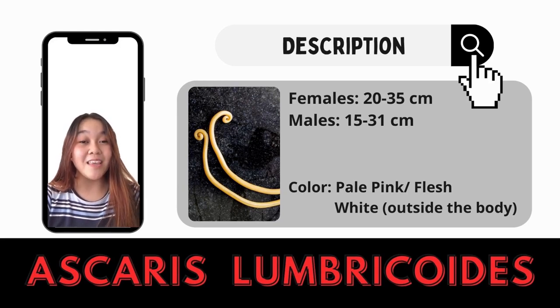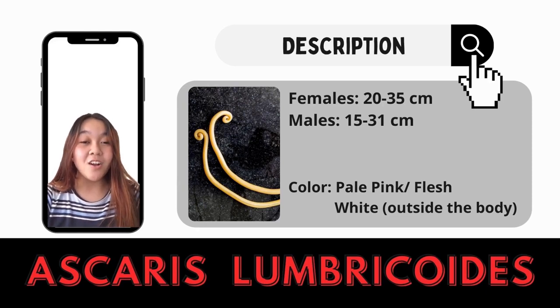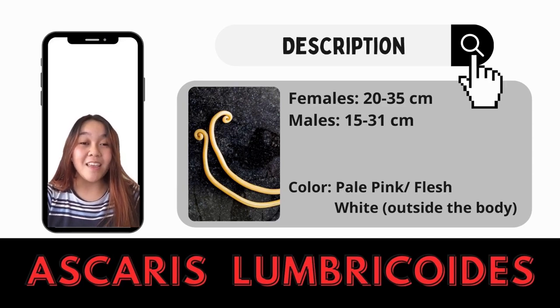The mouth at the anterior end has three finely toothed lips — one dorsal and two ventral lateral. The color of Ascaris lumbricoides is pale pink or flesh when freshly passed in stools, and they are colored white when exposed outside the body.